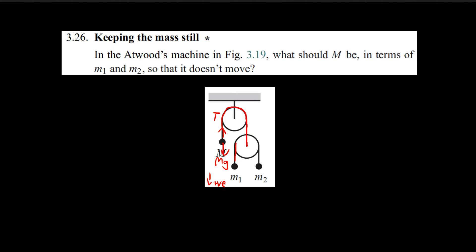We can also consider the tension within this string over here. In this upward string at the top, it has a tension of T, and it is going to be pulling this pulley upwards. For this other string over here, it is going to have another tension, let's call it T1, and it is going to pull this pulley downwards. Because this force is acting on both sides, the downward force exerted by T1 acting upon the pulley gives a 2T1 amount of force pulling this pulley downwards. Because this pulley is massless, these forces must balance, so 2T1 must be equal to T.